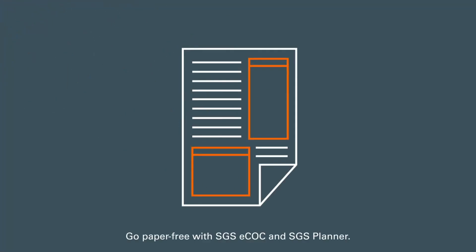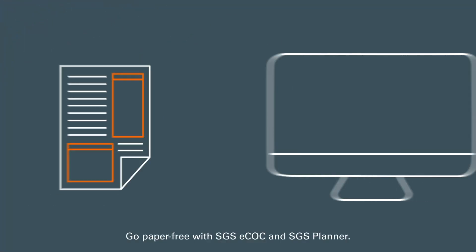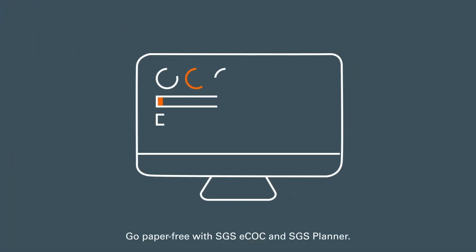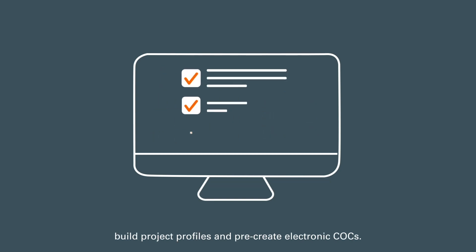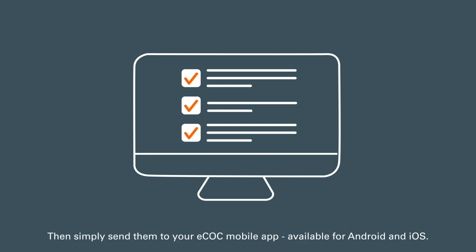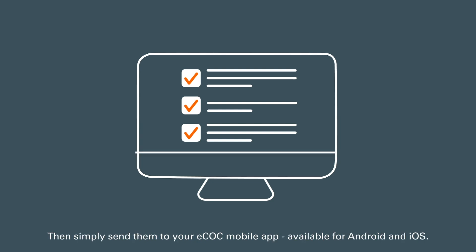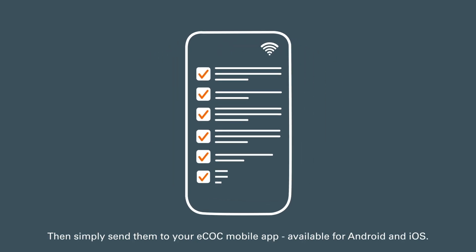Go paper-free with SGS eCOC and SGS Planner. Manage sampling projects and track their progress online. Build project profiles and pre-create electronic COCs, then simply send them to your eCOC mobile app, available for Android and iOS.